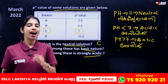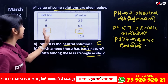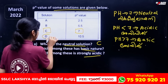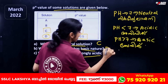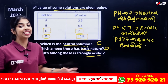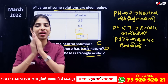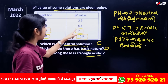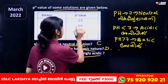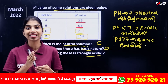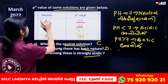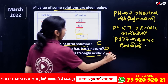Which among these has basic nature? It is D, with pH 10.5 — it is a basic solution. Which one is strongly acidic? There are two acidic values: 5.5 and 2.5. The strongly acidic one is A, with pH 2.5.